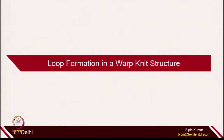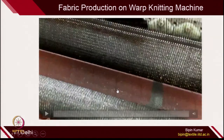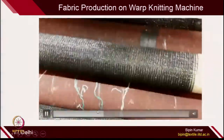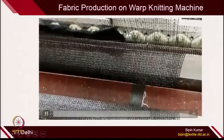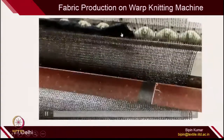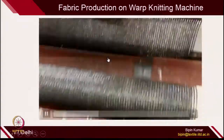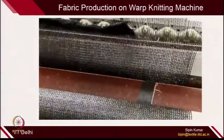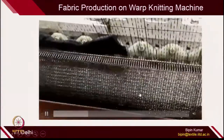Before moving to loop formation in warp knit structures, a quick recap on yarn movement in the fabric. This is the actual machine on which you create warp knit fabric. You can see the fabric being rolled down on a roller, and this is where the loops are being created. At this moment it is difficult to understand, but slowly I will unfold each machine element and each step of creation of a warp knit structure.